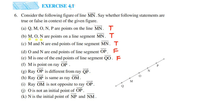The next statement is: M is a point on ray OP. Ray OP extends towards P from the right side. Point M is not on ray OP. So it is a false statement and the answer is false.